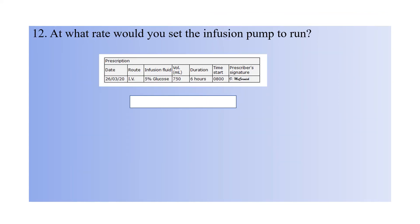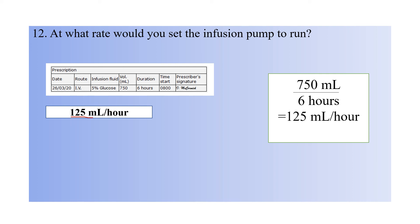Question twelve: at what rate would you set the infusion pump to run? Route is IV infusion, fluid is 5% glucose, volume in bag is 750 mL, and duration is 6 hours, starting at 8 AM. The answer is 125 mL per hour. Divide the total volume by the duration: 750 mL divided by 6 hours equals 125 mL per hour. Set the infusion pump to 125 mL per hour.